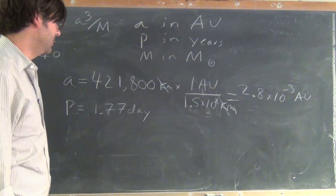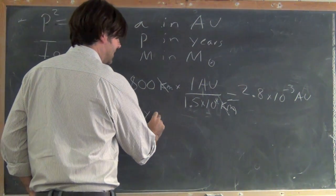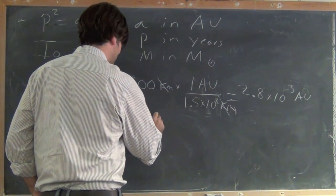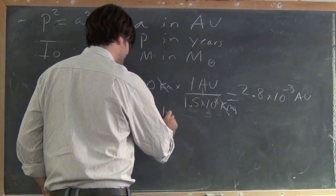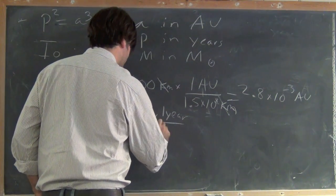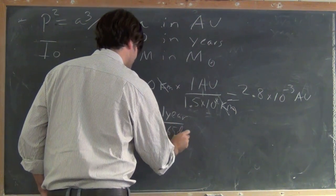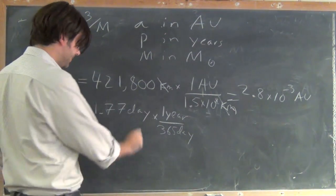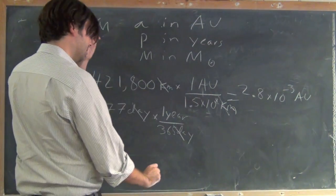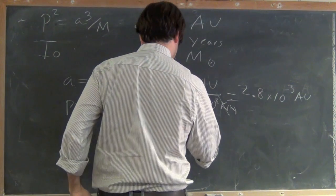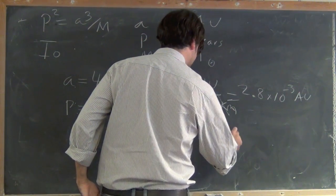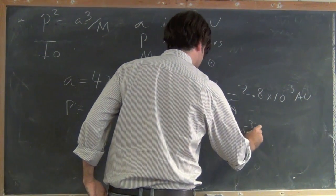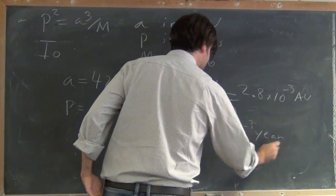Now let's redo the same thing for the period. 1.77 days, well, I'm going to multiply that by 1 year over 365 days. Again, these are equal to each other, so I'm just multiplying by 1. I cancel off the days, and I'm left with 4.8 times 10 to the minus 3 years.